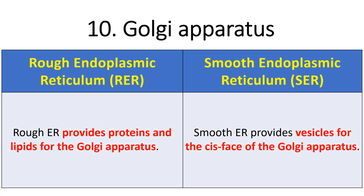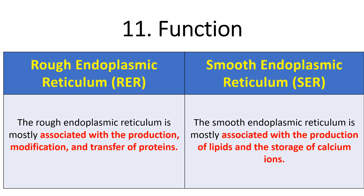Regarding the Golgi apparatus: rough endoplasmic reticulum provides proteins and lipids for the Golgi apparatus, whereas smooth endoplasmic reticulum provides vesicles for the cis phase of the Golgi apparatus. In terms of function, rough ER — having ribosomes — is mainly associated with production, modification, and transfer of proteins. Smooth ER, lacking ribosomes, is not involved in protein synthesis but rather in lipid synthesis and storage of calcium ions.